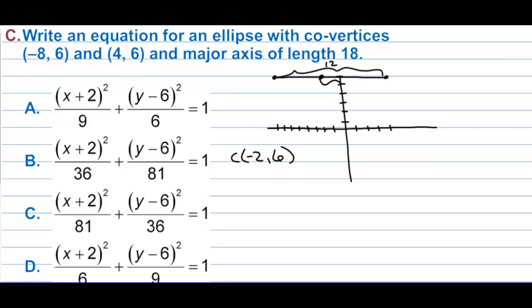The distance from the center to each co-vertex is 6, which is b since it's the minor axis. The equation starts as (x plus 2) squared over something plus (y minus 6) squared over something equals 1.